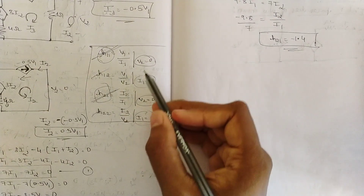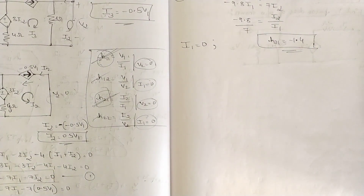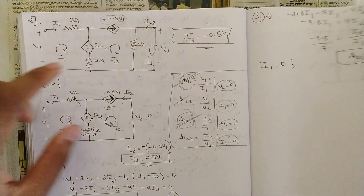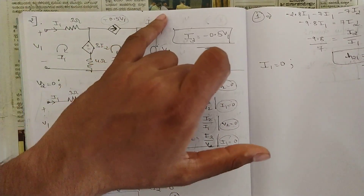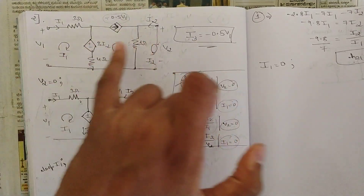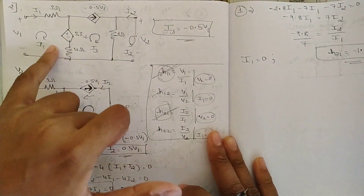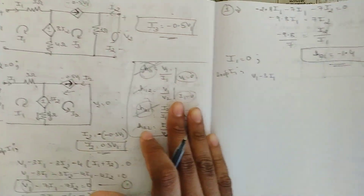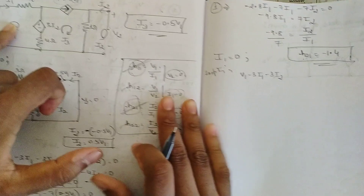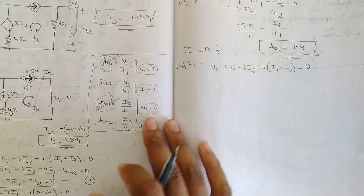We have found h11 and h21 for the condition v2=0. Now applying the second condition, i1=0. For this we return to the original starting circuit with three loops: i1, i2, i3. With i1=0, v2 comes into the picture. Apply mesh analysis individually to each loop. For loop i1: v1 − 3·i1 − 3·i2 − 4·(i1 − i3) = 0.